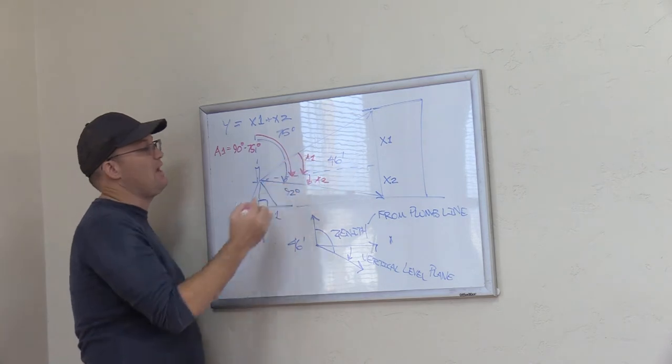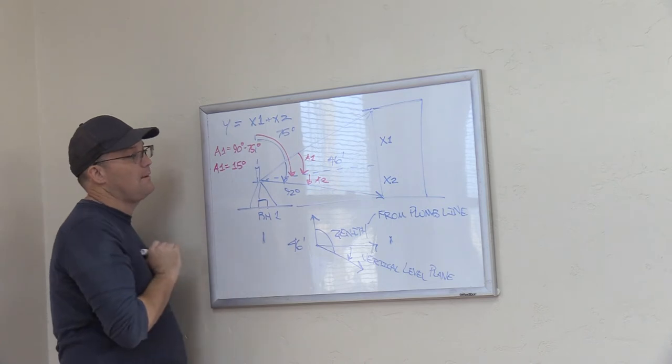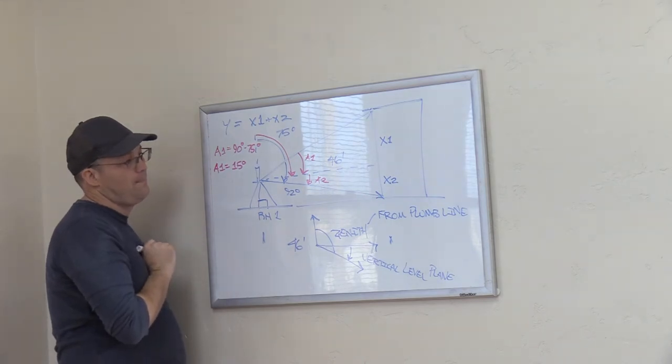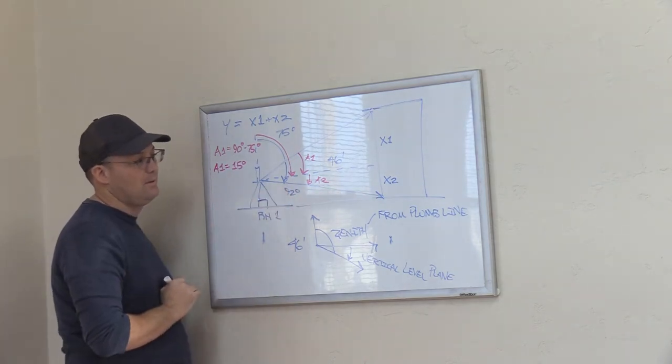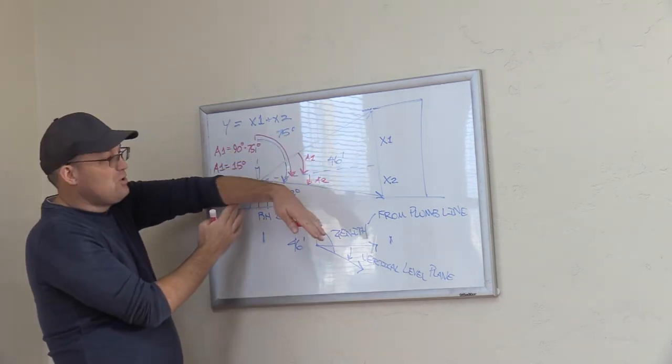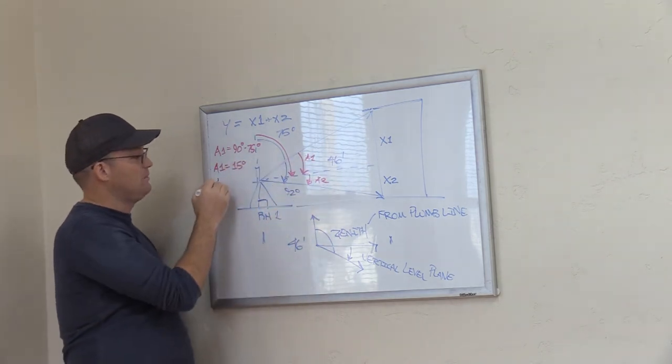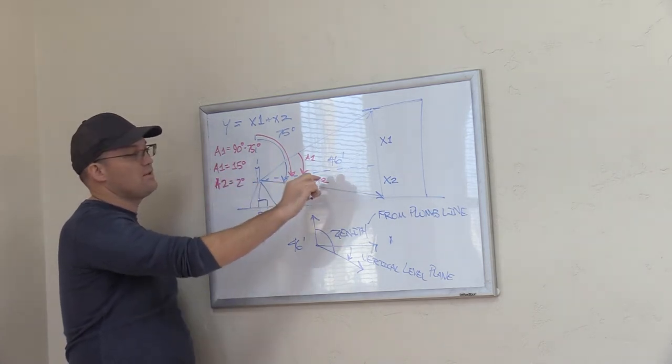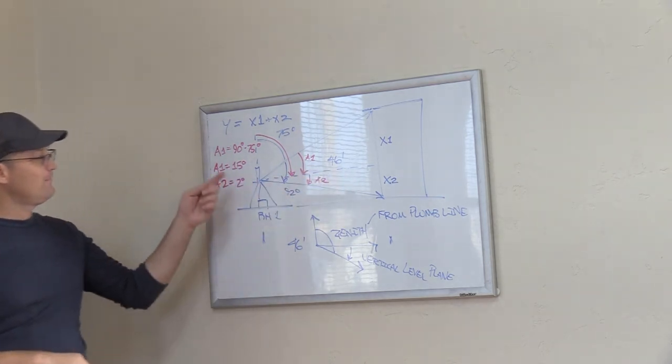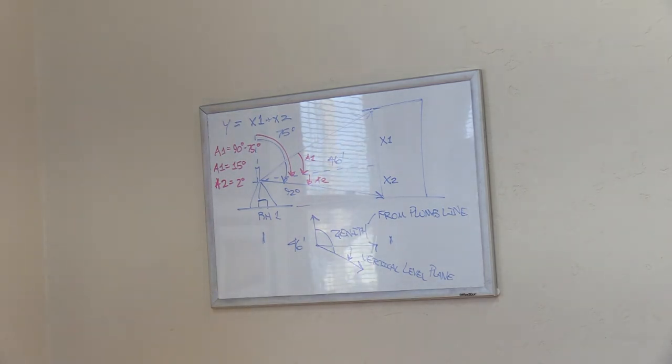So what's the angle A1? A1 is 15 degrees. Now we need A2. A2 is a little easier. Here's the bottom 90, right? We know we're two degrees past plumb, so what's the angle A2? Two degrees. We look at this little angle here, right? So what we just did right there is we just converted zenith angles to vertical angles. That's something a surveyor should know how to do.